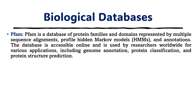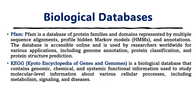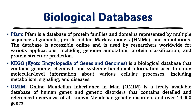Seventh, PFAM is a database for protein families and domains, representing multiple sequence alignments, profile hidden Markov models, and annotations. Eighth, KEGG, the Kyoto Encyclopedia of Genes and Genomics, is a biological database containing genomic, chemical, and systemic functional information used to study molecular-level information. Ninth, OMIM, Online Mendelian Inheritance in Man, is a freely accessible database for human genes covering all diseases that are genetic disorders transferred through inheritance.